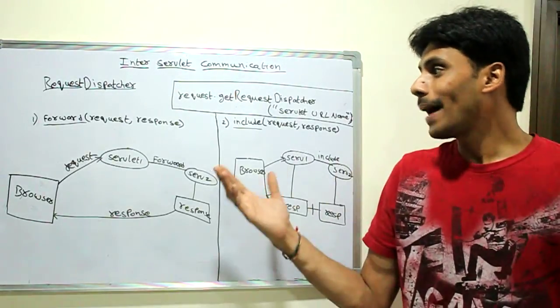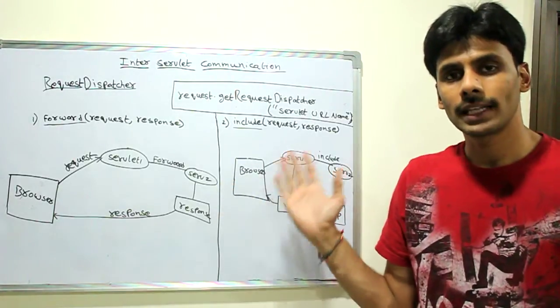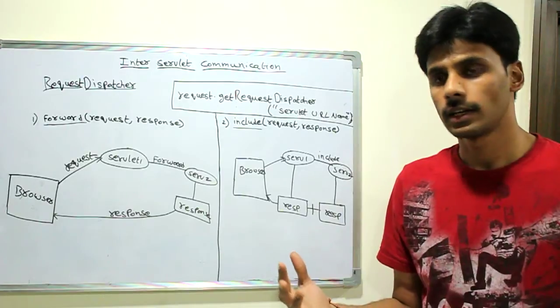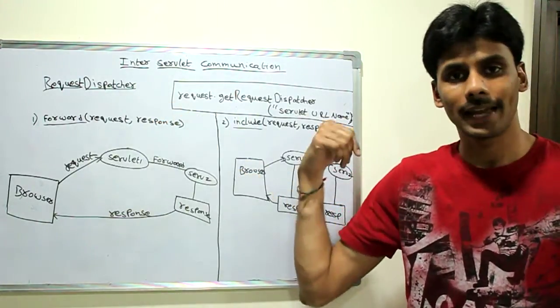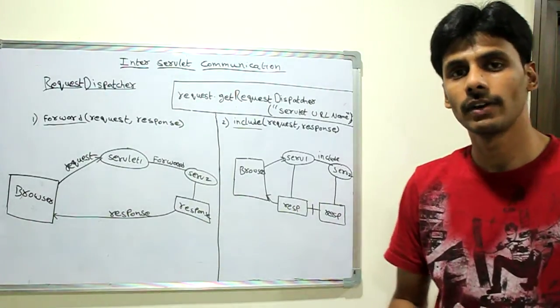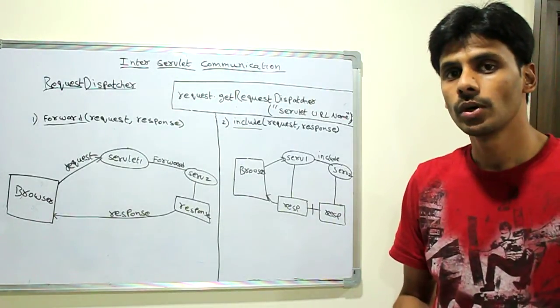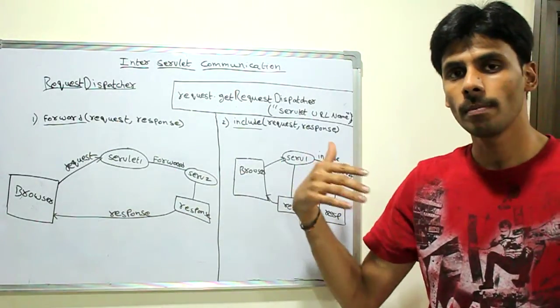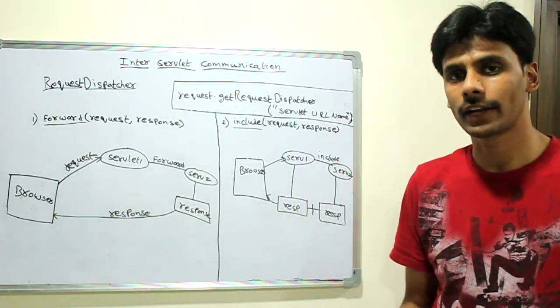When you pass the request from one servlet to another servlet, the request and response objects can be passed as is using the request dispatcher mechanism. So the request dispatcher interface in the Java servlet API allows us to use two methods, forward and include, to perform delegation of servlet requests.